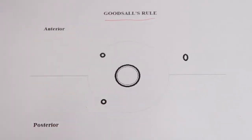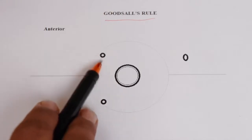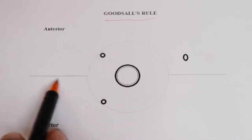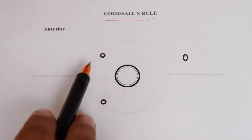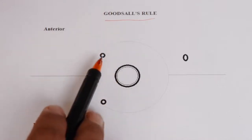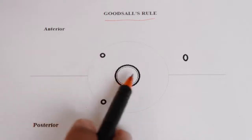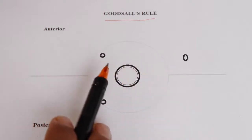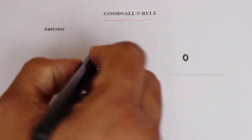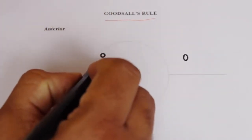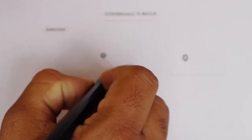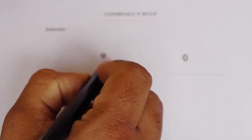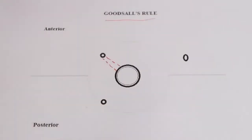Goodsall's rule states that if the external opening is anterior — that is, towards the perineum relative to the imaginary line drawn across the midpoint of the anus — the fistula track runs straight and directly into the anal canal. This is the relation when the external opening is on the anterior side.